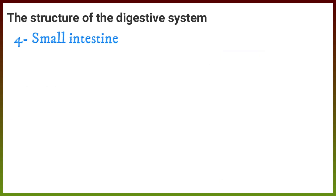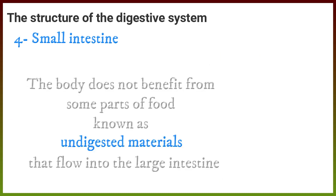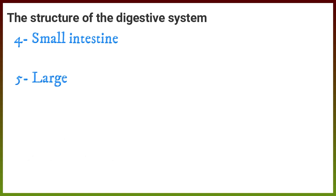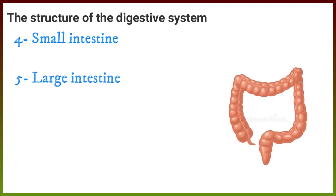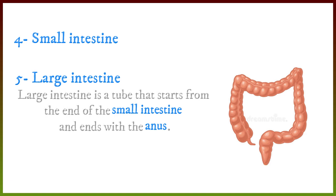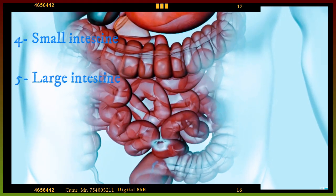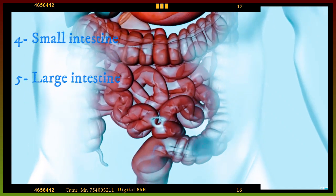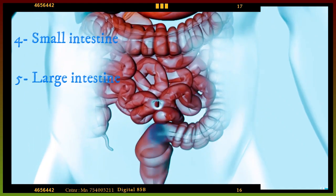The body does not benefit from some parts of food, known as undigested materials, which flow into the large intestine. The large intestine is a tube that starts from the end of the small intestine and ends with the anus. The large intestine absorbs water from the undigested materials so they become solid wastes that come out through the anus.